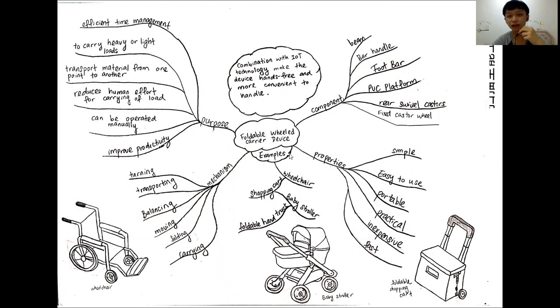And that has some examples of the foldable wheel carrier device, which is the wheelchair, shopping cart, baby stroller, and our foldable hand truck.